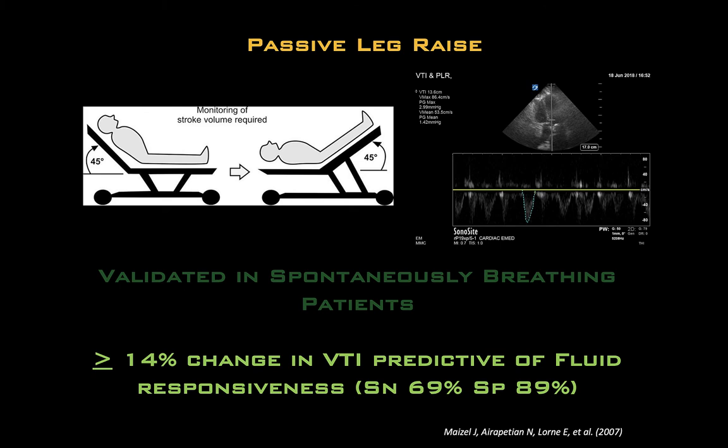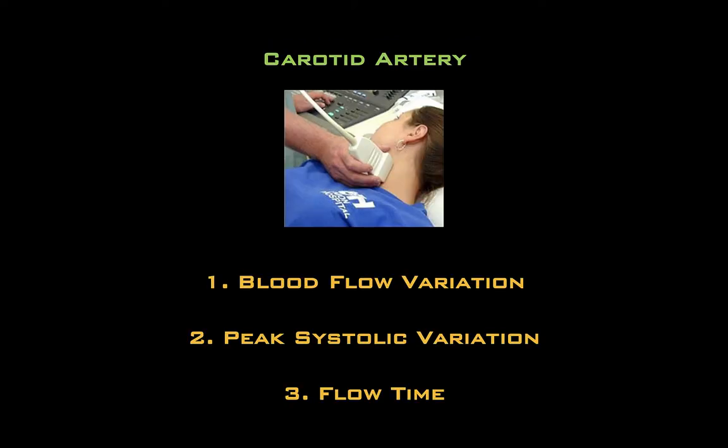An additional method you could employ is the passive leg raise technique. This is essentially the equivalent of a volume challenge of 300 to 500 cc of crystalloid — again, we are challenging that Frank-Starling curve. This technique involves measuring the LVOT VTI initially and then raising the patient's legs to 45 degrees in a supine position. After one minute has passed, re-measure the VTI. Reports suggest a 14% increase is indicative of volume responsiveness. One advantage of this technique is that it has been validated in spontaneously breathing patients and also patients with atrial fibrillation, provided that at least five measurements are averaged.